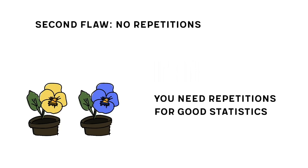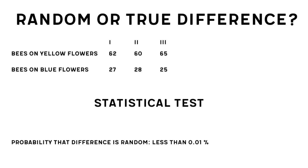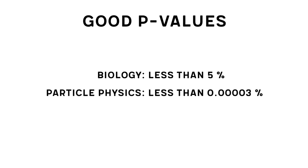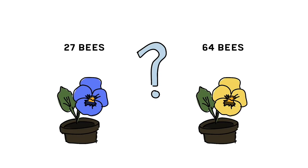As it turns out, you need repetitions of your experiment to do statistics. And without statistics, you can't be sure of anything. If you want to know whether what you measure is random or truly different between your two conditions, you do a statistical test that tells you with what probability your result could be random — that is called a p-value. You want that number to be low. In biology, we are happy with a chance of 1 in 20, so 5%, that the difference we observe happened by chance. In high energy particle physics, that chance is 1 in 3.5 million, or 0.00003%.